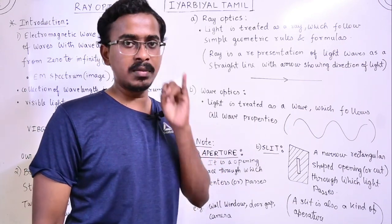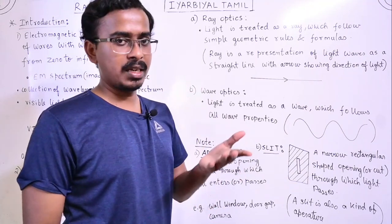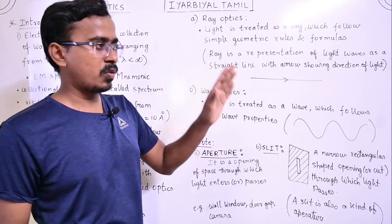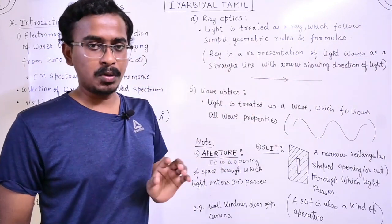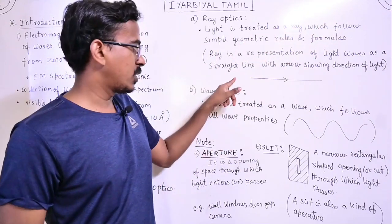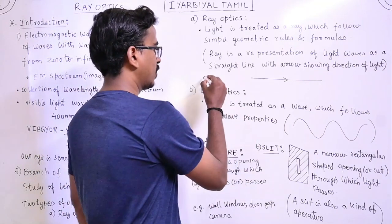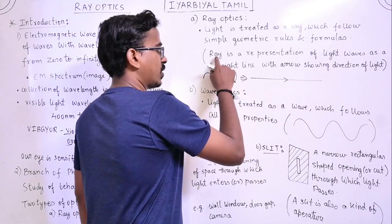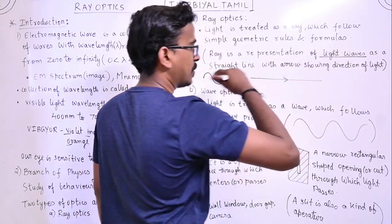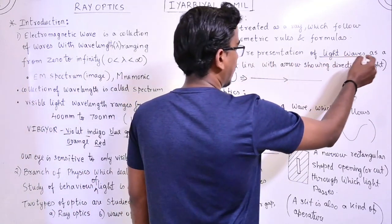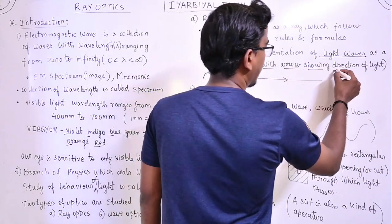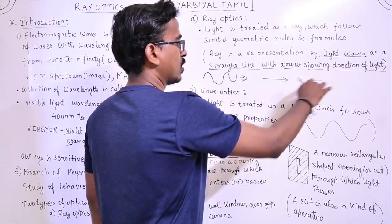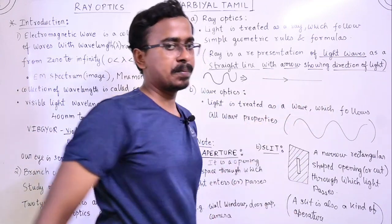But what is a ray? Light comes as a wave. When we represent a wave as a straight line with an arrow, that is a ray. So, a ray is a representation of light waves as a straight line with an arrow showing the direction of light travel. If the light ray goes in a particular direction, the arrow indicates the direction the light is traveling.